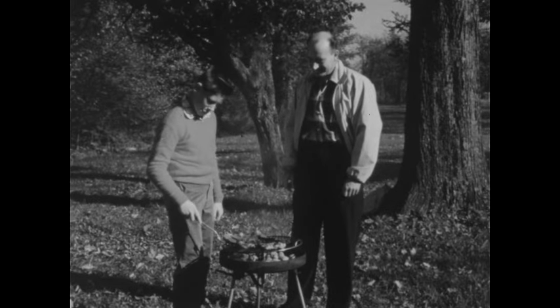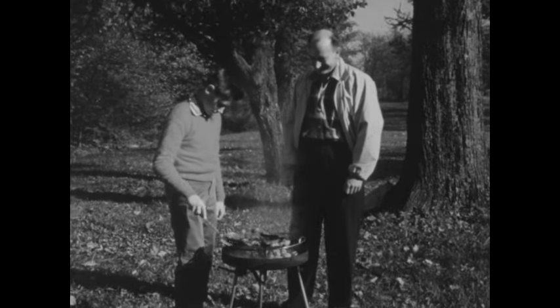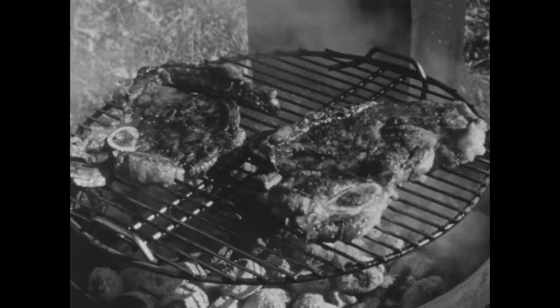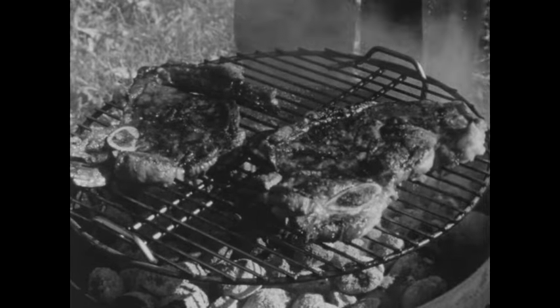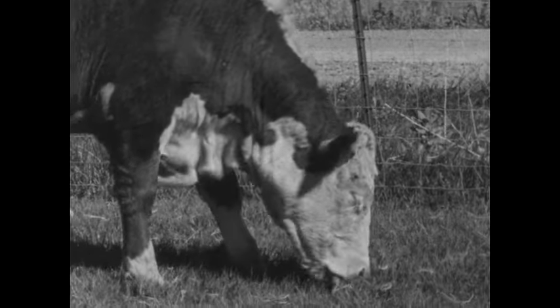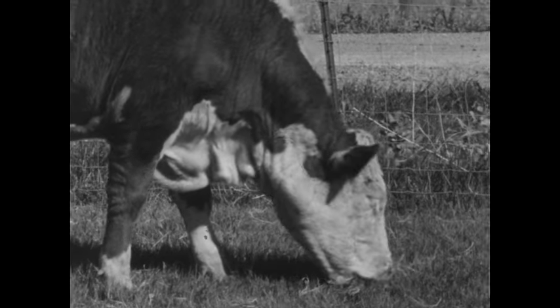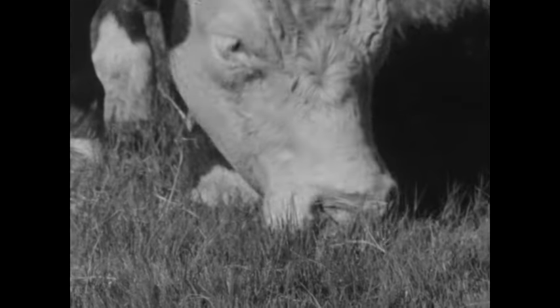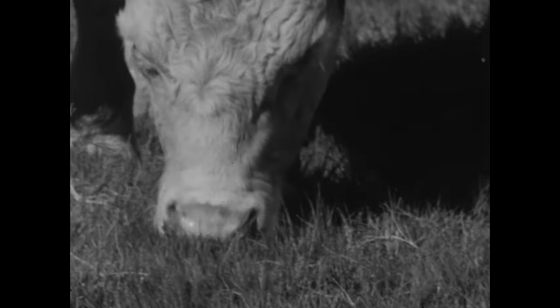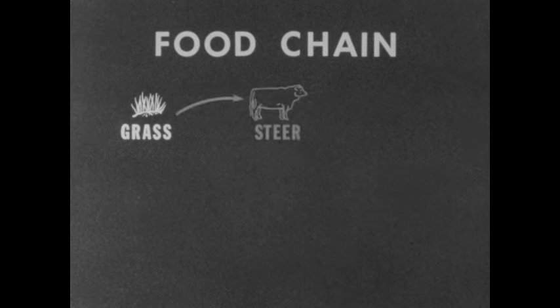A process by which food reaches any consumer may be described as a food chain. This meat, for example, is a link in one such chain. The meat came from a steer. In order for the steer to develop, it too needed food. The food in this case was grass. Thus, grass is another link in this food chain, which when put together might look like this: grass is eaten by steer, which is eaten by human.